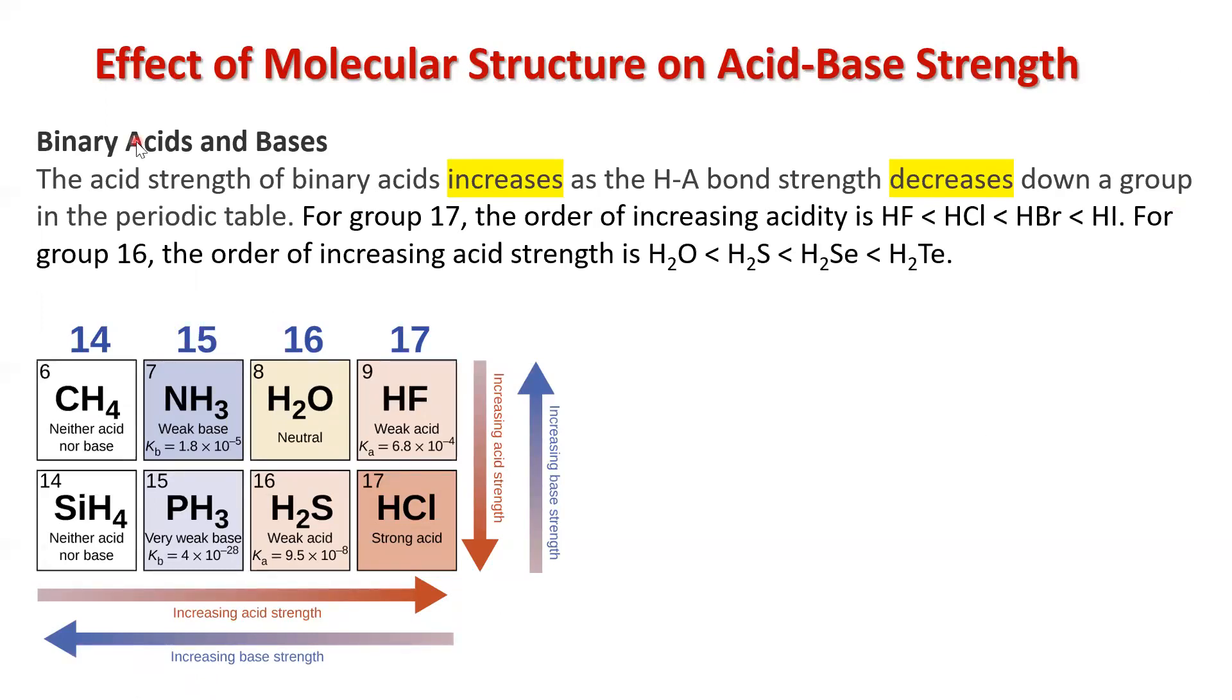When we look at binary acids, remember that binary acids have hydrogen as their positive ion, and they have some monatomic anion for their negative ion. So there's only two types of atoms that are in there.